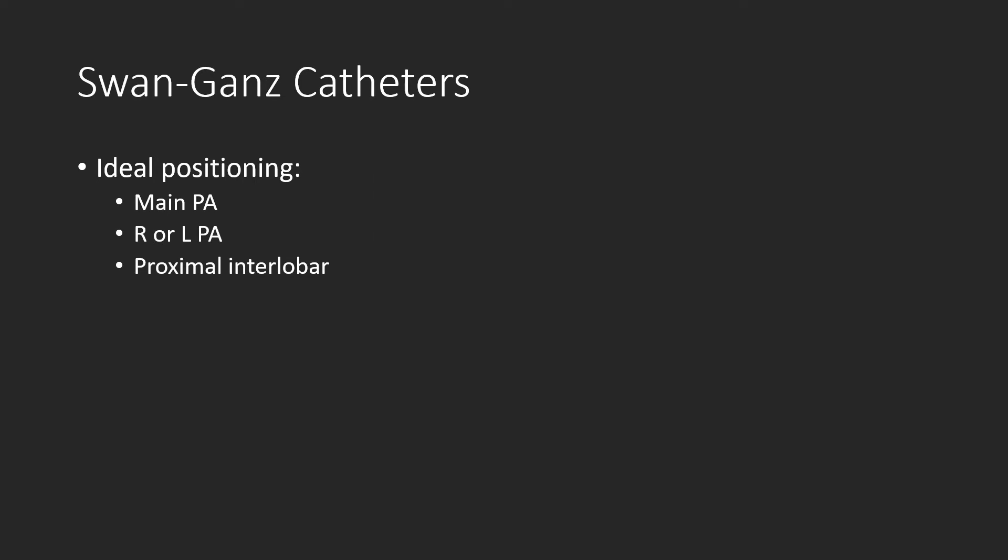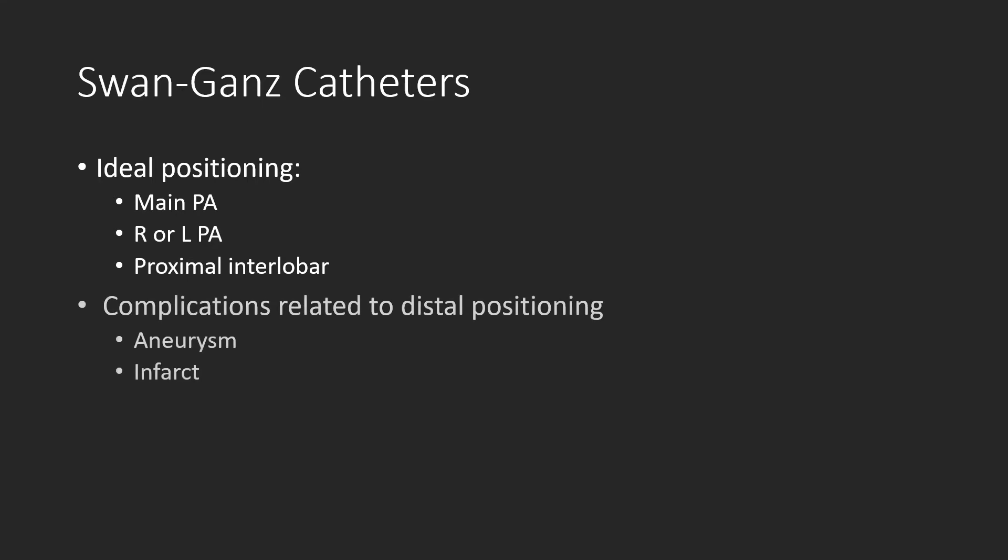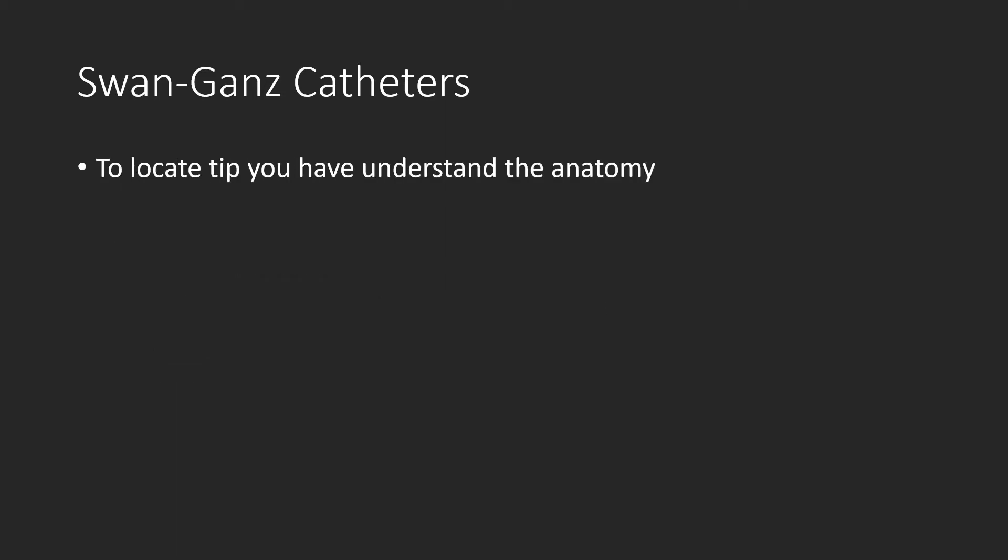Ideal positioning for these catheters is usually within the main pulmonary artery, the right or left pulmonary arteries, or the proximal interlobar pulmonary arteries. The problem is if they are placed too distally within the distal lobar or segmental pulmonary arteries, especially for prolonged periods of time, this can lead to complications such as aneurysms or infarcts.